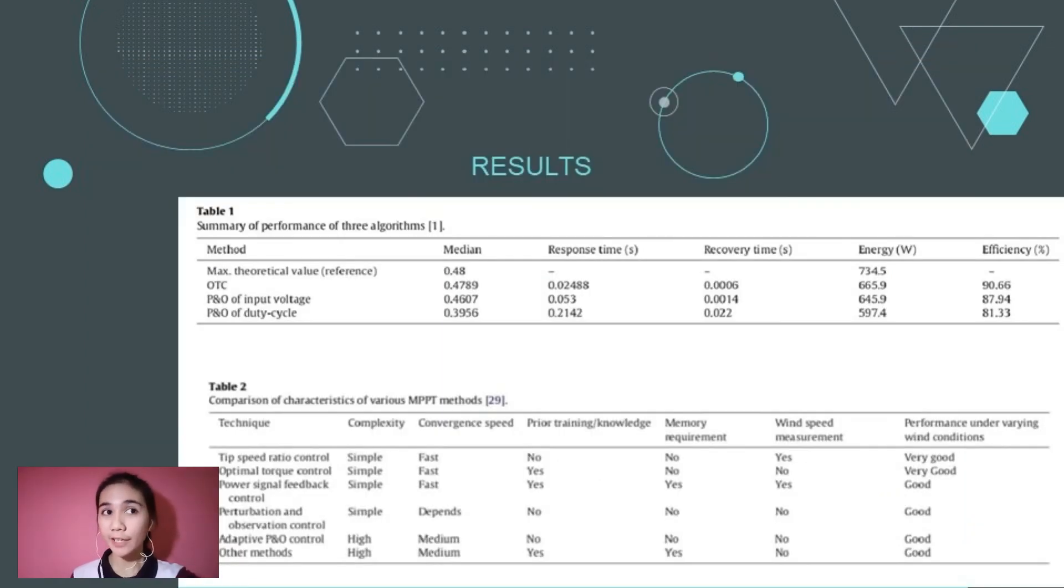Within these diagrams, a summarized tabulated result was presented in a table. Based on results and analysis, the OTC controller was found to be the fastest in achieving the steady state. The recovery time upon wind speed change was also faster for this algorithm. Additionally, the OTC method reached the highest value of coefficient power and maintained that value even after the change in wind speed.